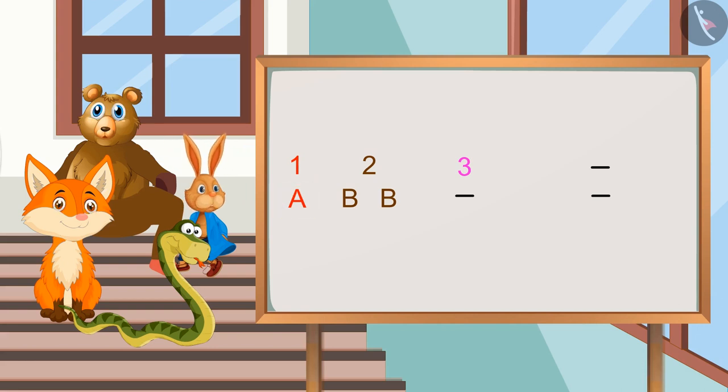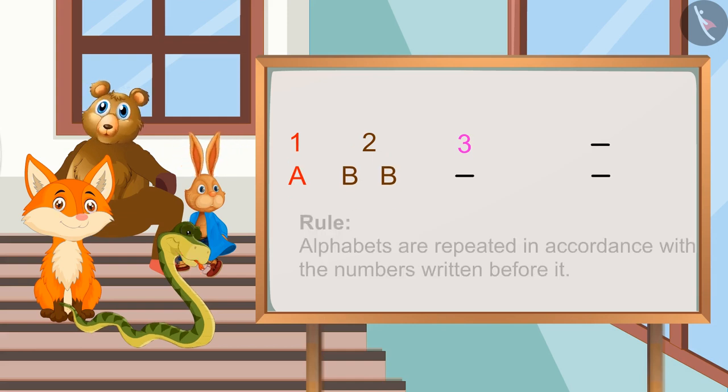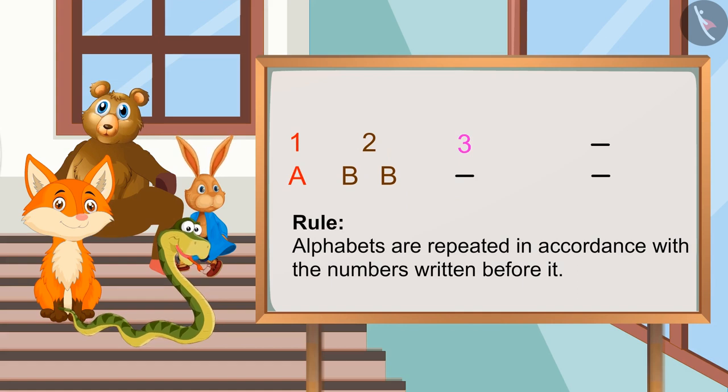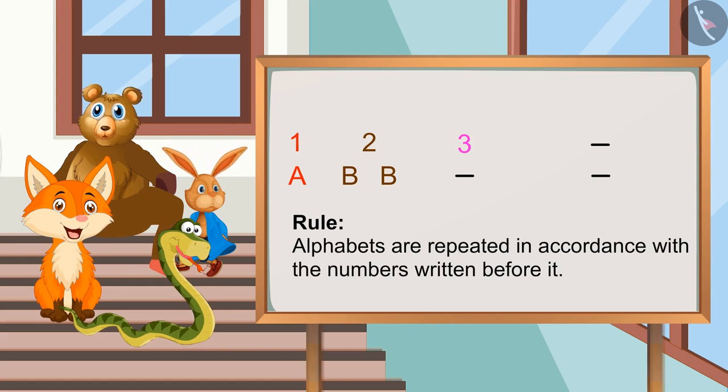Then we have number two and alphabet B is written twice. So the rule for this is alphabets are repeated in accordance with the numbers written before it. Absolutely right, Kamini. So according to this rule...